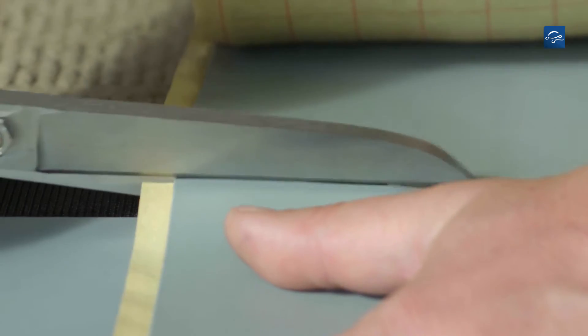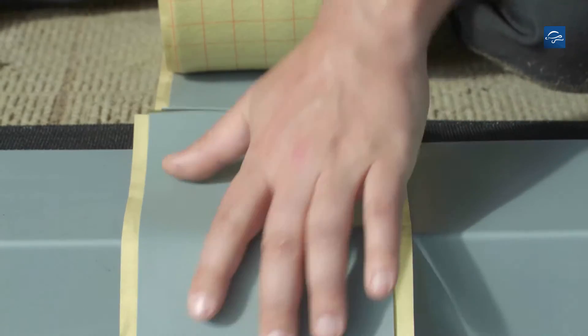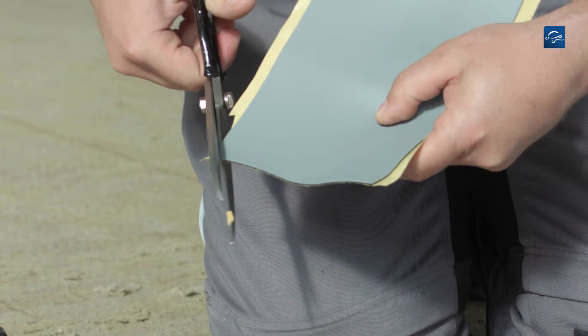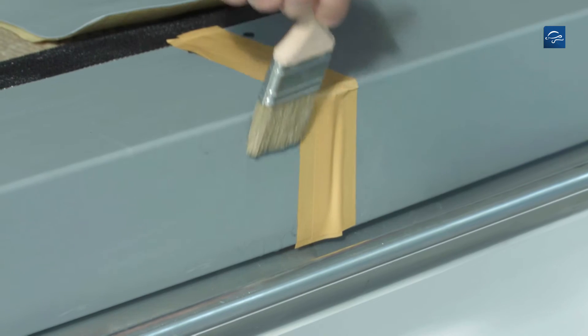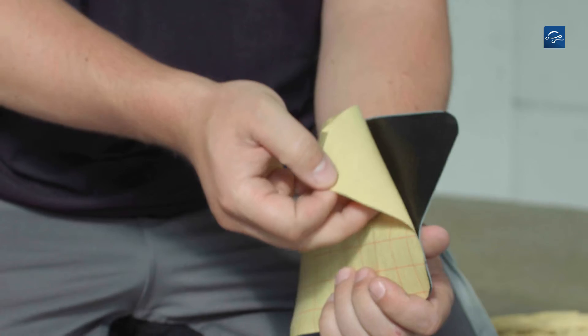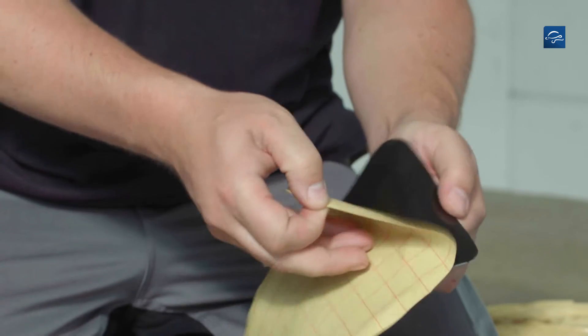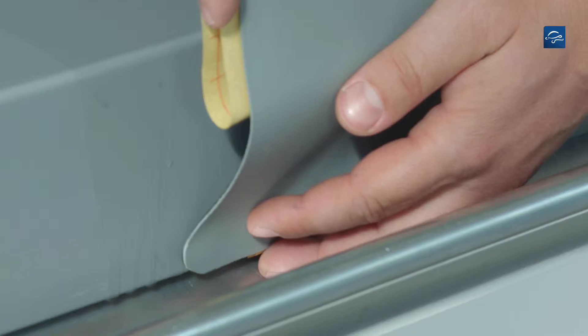Then cut out a Repanol cover tape of at least 15cm width and round off the lower corners. Clean the working area with Repanol solvent welding agent, then remove the release film from the lower third and fix the cover tape.